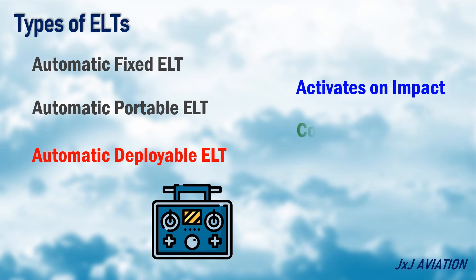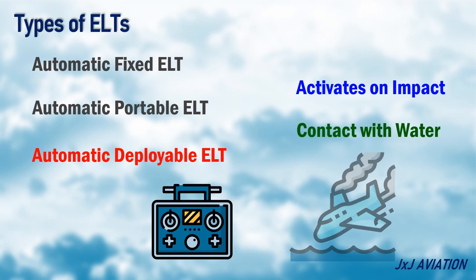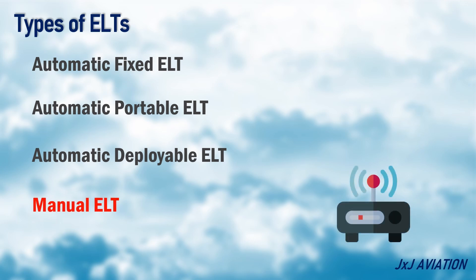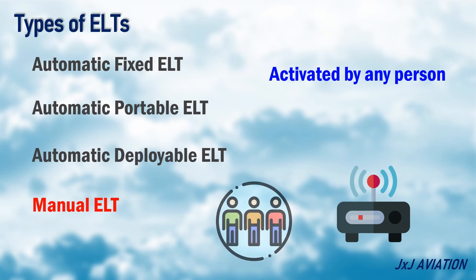The Automatic Deployable ELT can also activate if its sensor comes in contact with water. The Manual ELT can be activated by anyone on board the aircraft, and is used as a backup if the automatic activation of the ELT fails.